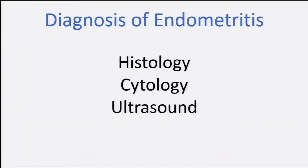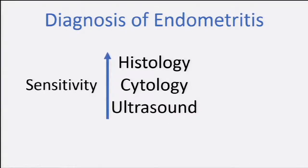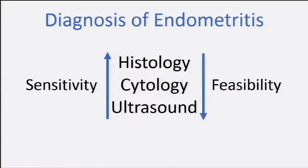How do we diagnose endometritis? You mainly have three techniques: histology, cytology, and ultrasound. There is no perfect technique — each has advantages and disadvantages. Histology is probably the best way to diagnose inflammation of the endometrium because we can see all the inflammatory cells through the different layers, but it's invasive, time-consuming, and expensive.